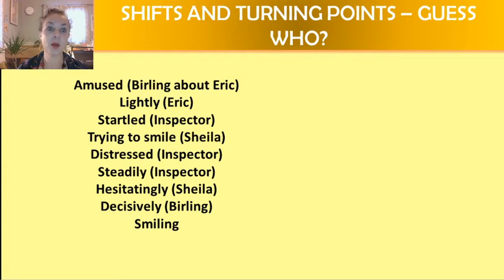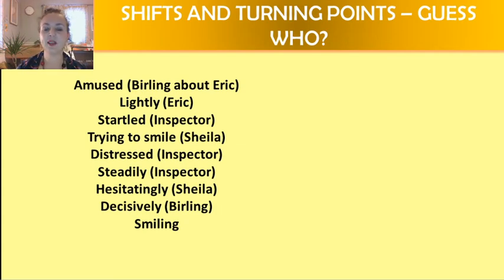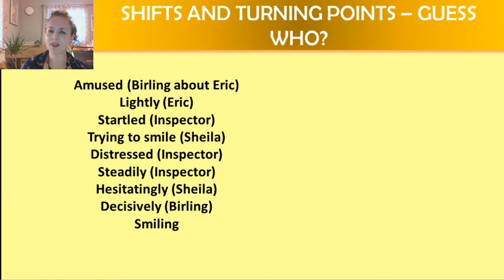The first stage direction says 'amused' — when he or she is speaking to Mr. Birling about Eric, they are amused. When they are speaking to Eric, they speak lightly, a light tone of voice. When they speak to the inspector for the first time, they are startled. When they speak to Sheila, they are trying to smile. When they speak to the inspector again, they are distressed. And then when they speak to the inspector again, they speak steadily — a kind of change of tone there.